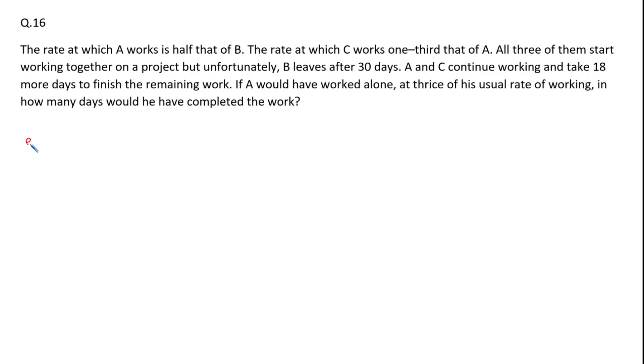The rate of work of A is half of B. So in one day, if B can do two units of work, A will do one unit of work. So the ratio of efficiency of A and B is one is to two.